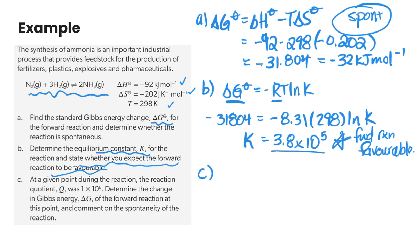Part C then says that we're given a reaction quotient Q of 1 times 10 to the 6 and we want to determine the delta G at that point. So we're going to use our second equation here, delta G naught plus RT ln Q, and essentially we're just plugging our values in.